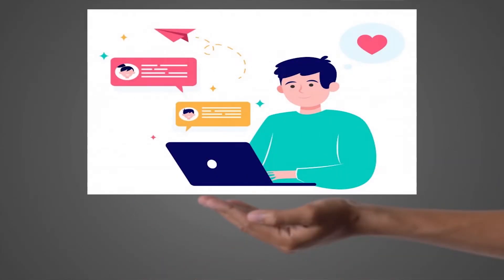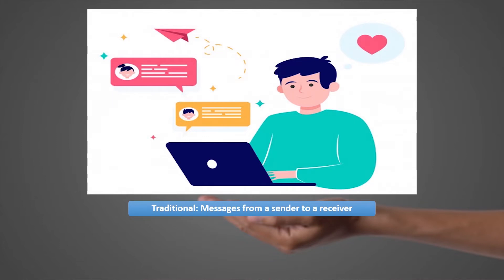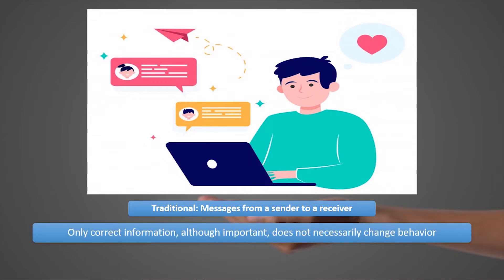Let's look at the shifts in understanding of behavior change communication as it has expanded in the last decade or so. It has moved from a more traditional or conventional method where there are messages sent from a sender to a receiver. It's one-way and one-to-one, and the assumption that only correct information — although important — leads to change in behavior does not hold.